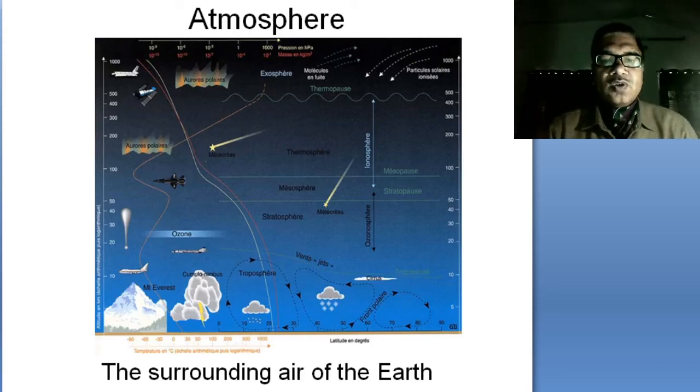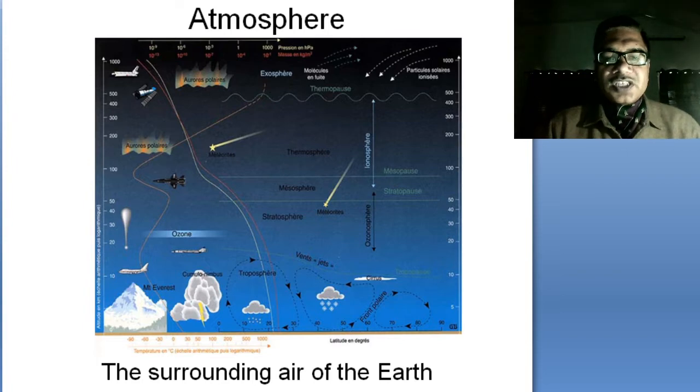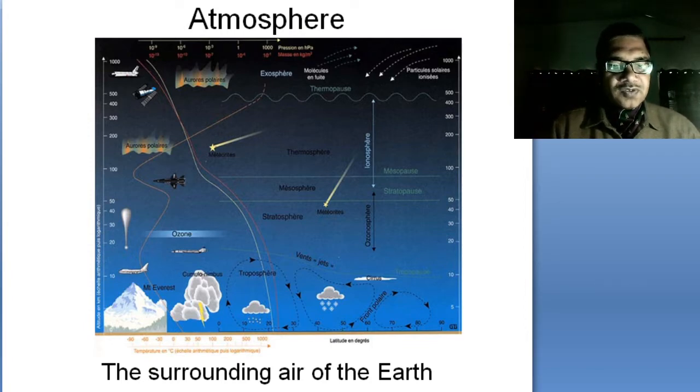Okay students, now let's talk about the various layers of the gases which are surrounding the earth's surface. We call them the various concentric layers of the earth's atmosphere.